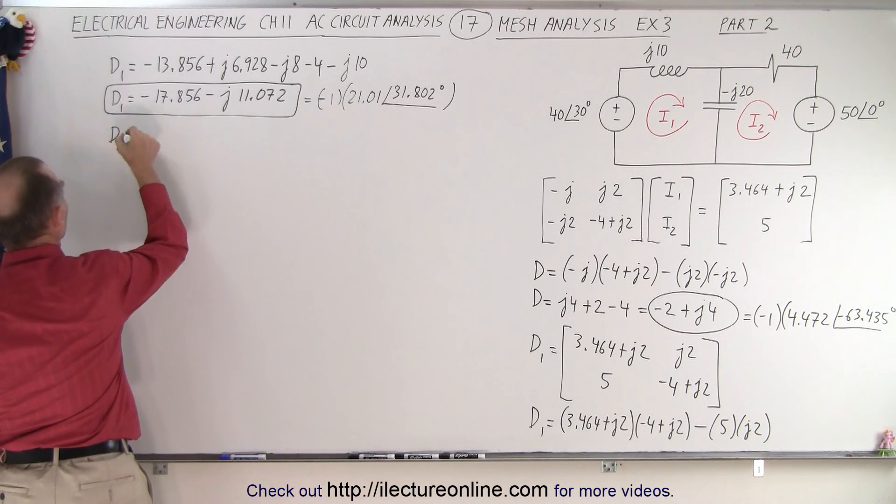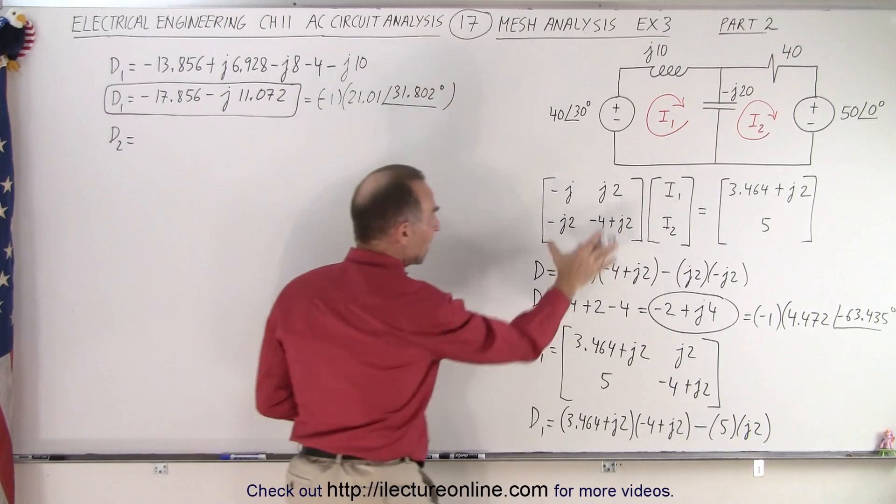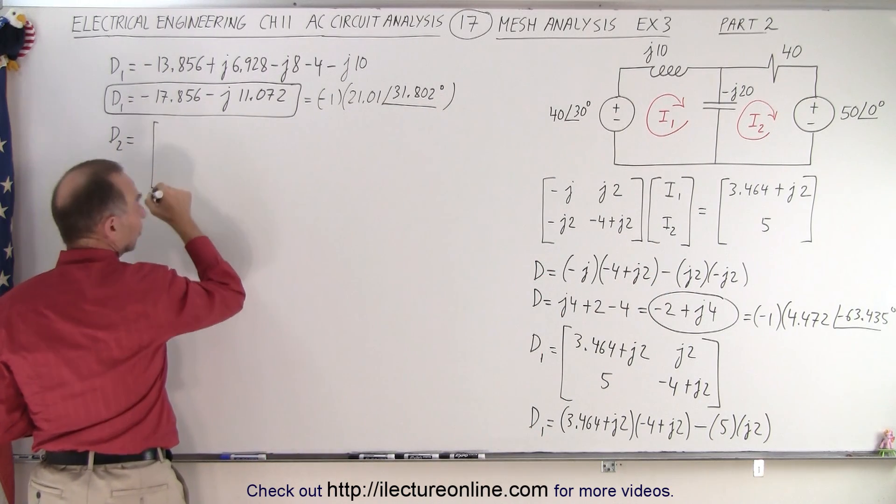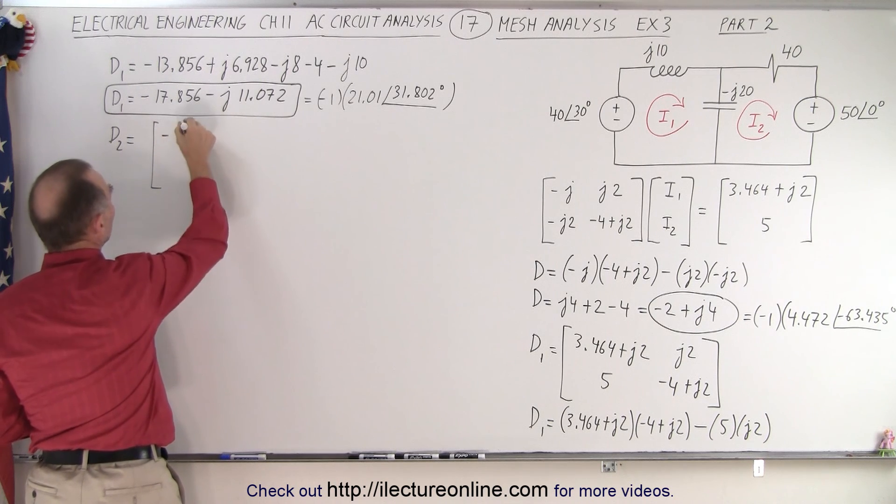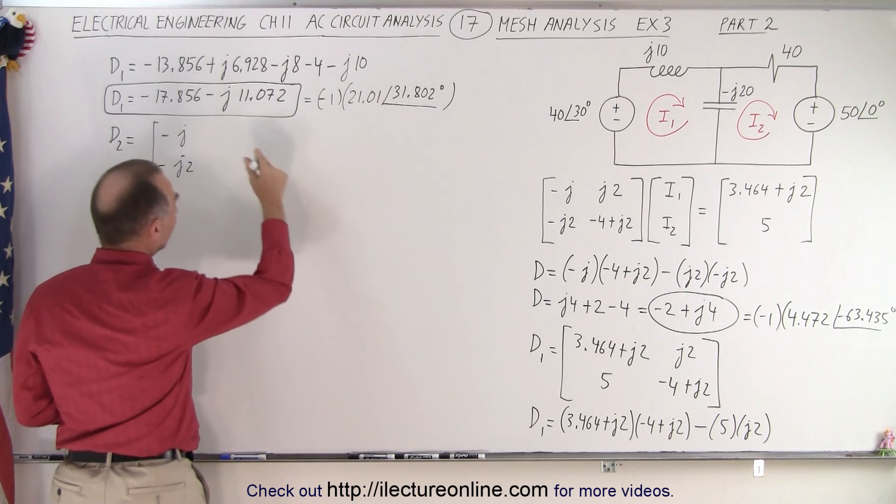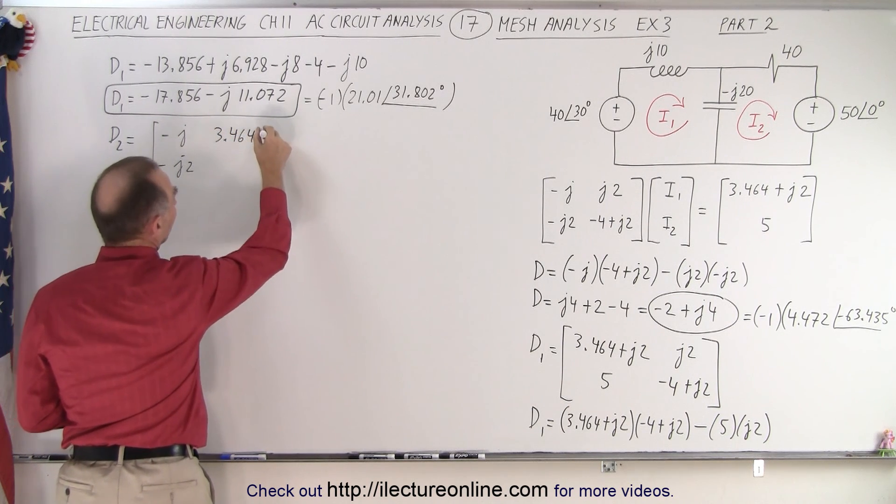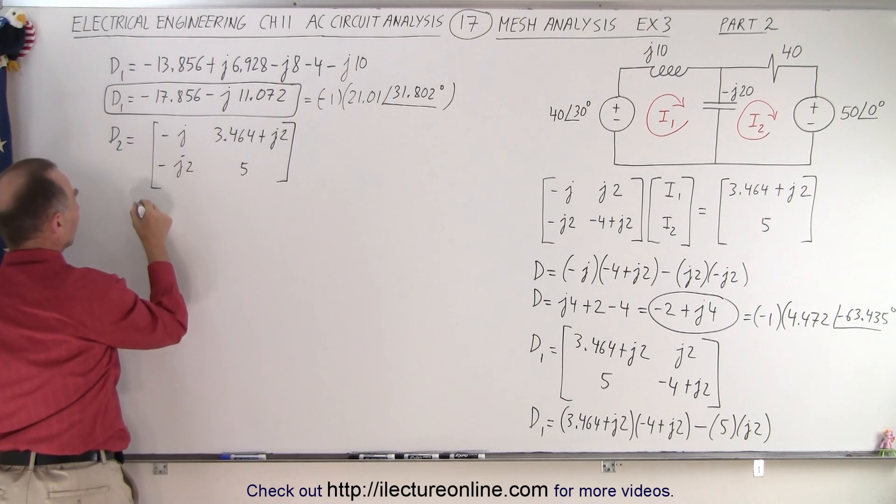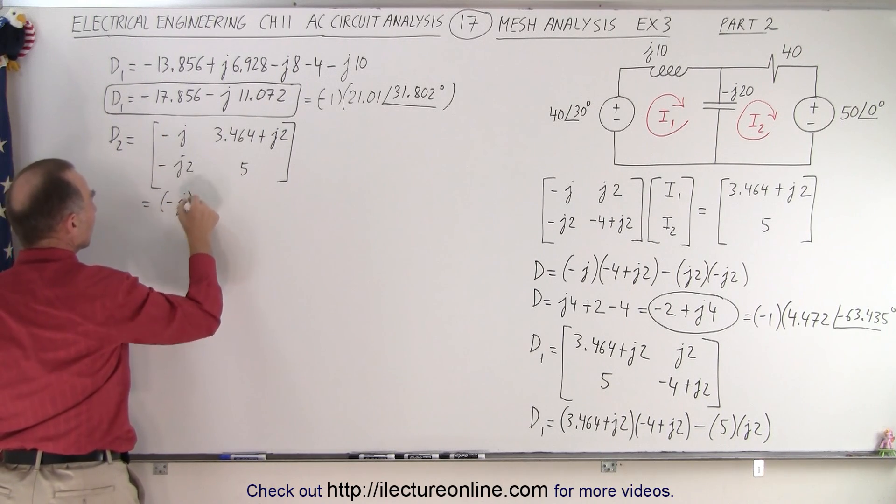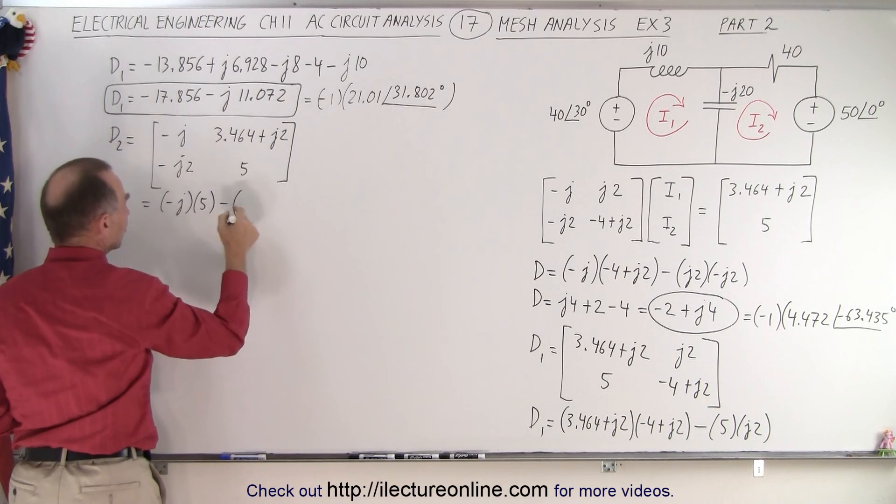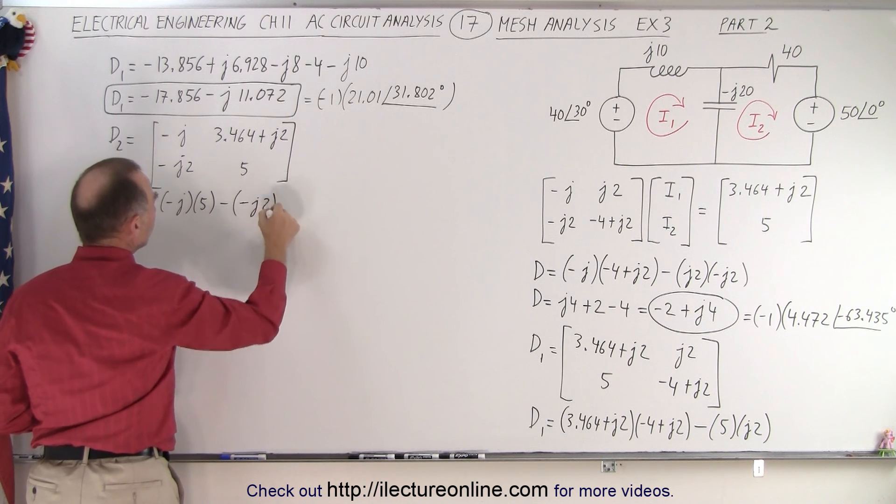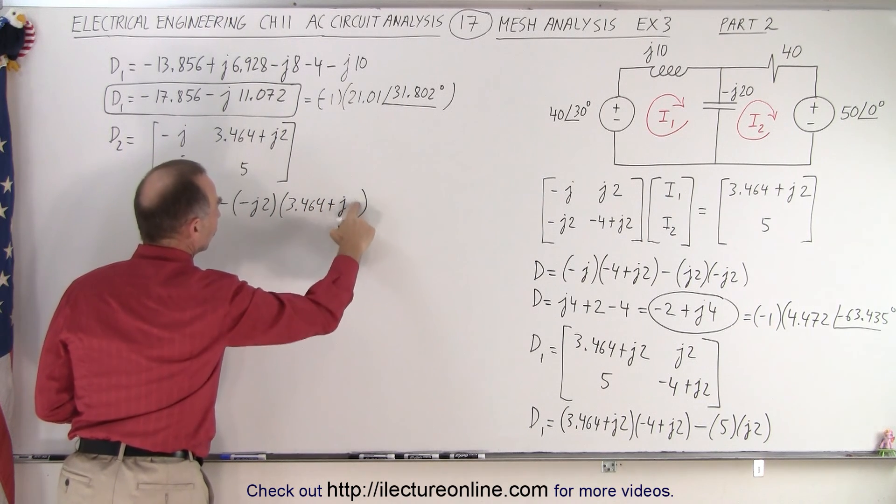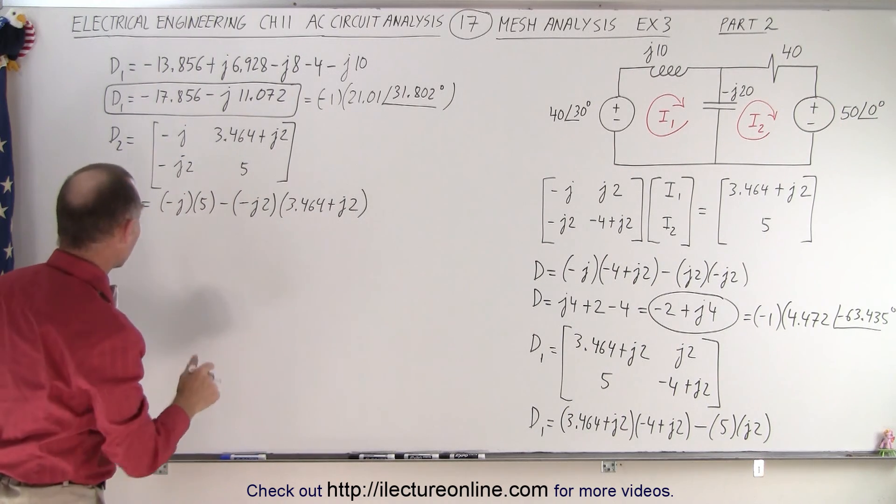How about D2? Well, D2 is equal to, when we take the matrix here, and we're going to replace the second column by those entries on the right side of the equal sign. So that gives it the following matrix. So we have minus J, minus J2, on the right side, we write 3.464, plus J2, and over here, a positive 5. Alright, let's work that out. So this is equal to the product of those two, which is minus J, times a positive 5, minus the product of those two. Remember how we keep track of the negative signs. So that's minus J2 multiplied times 3.464, plus J2. Better looking 2. Alright, now, let's work this out.